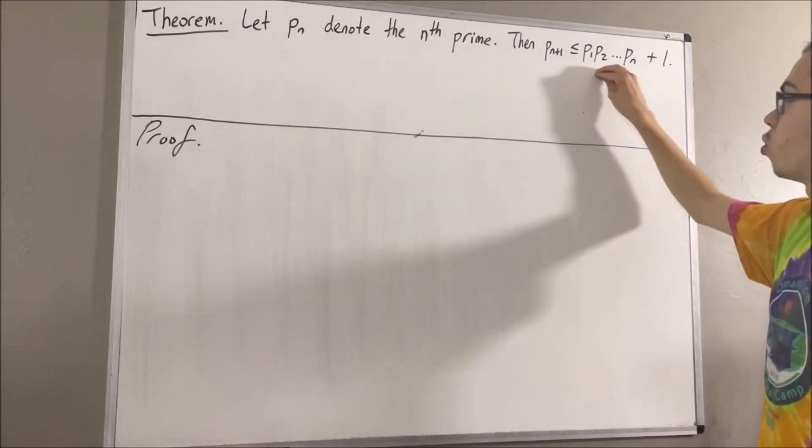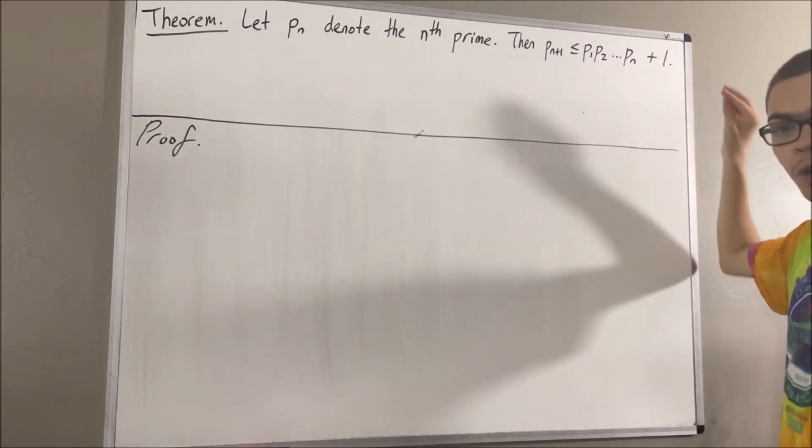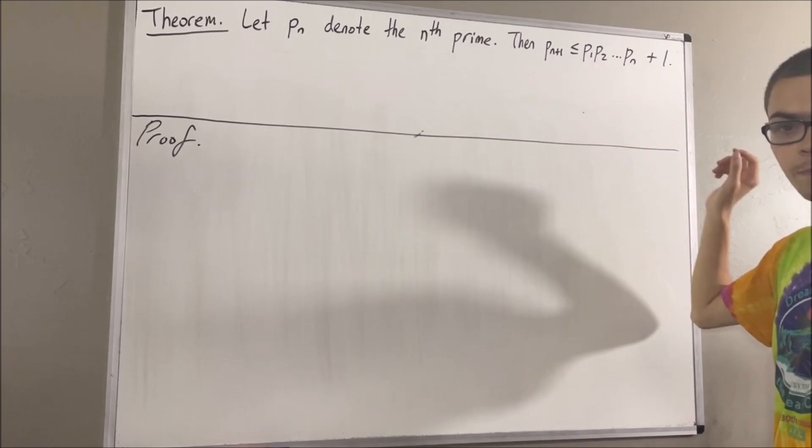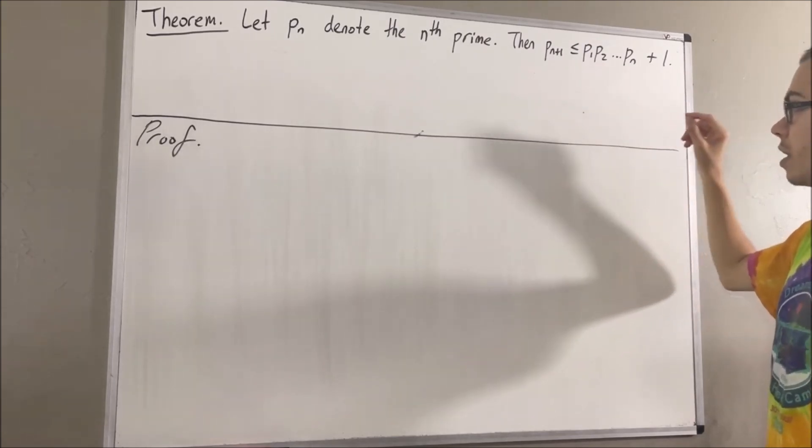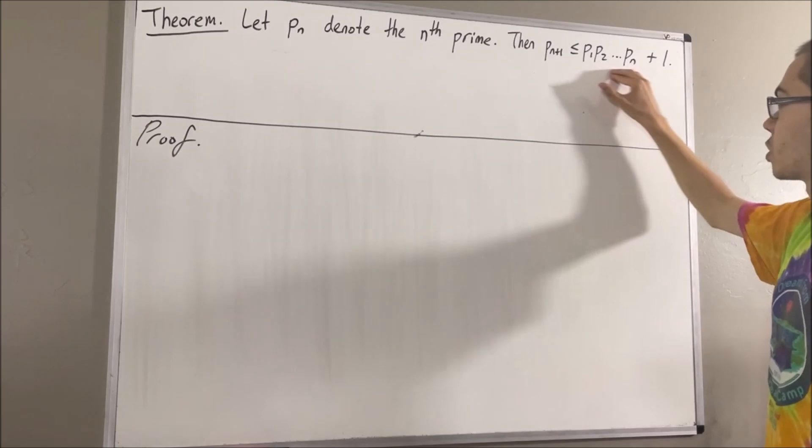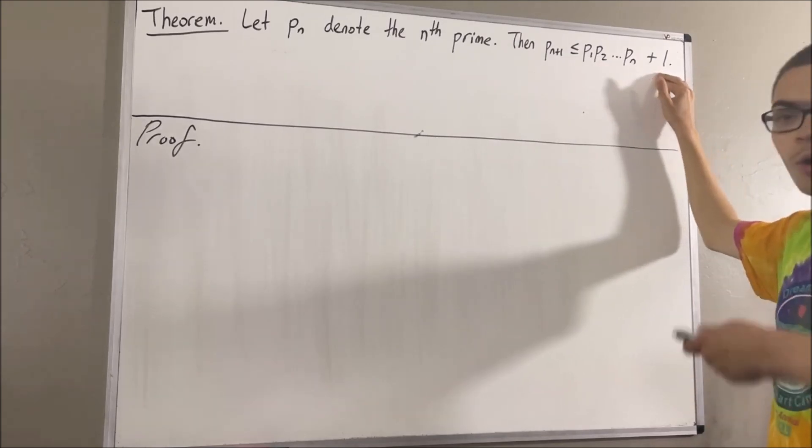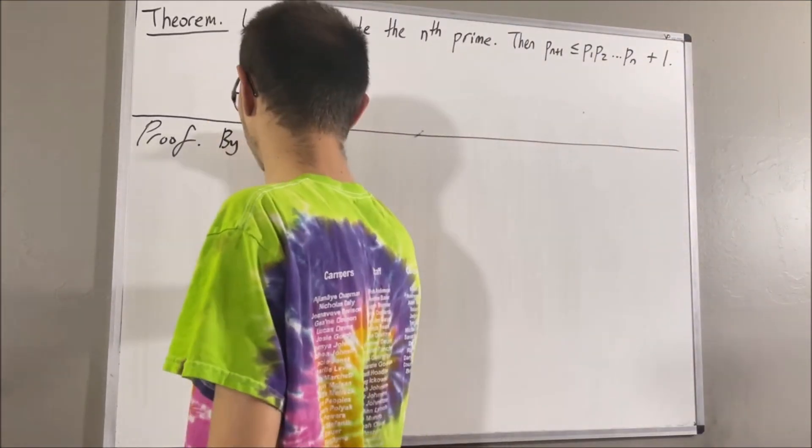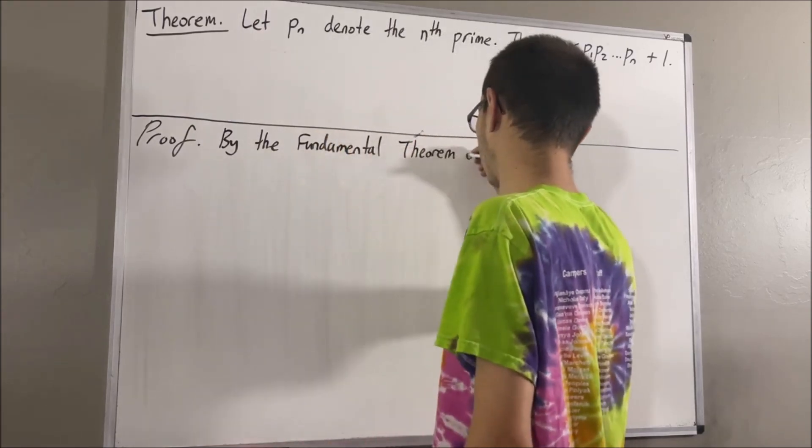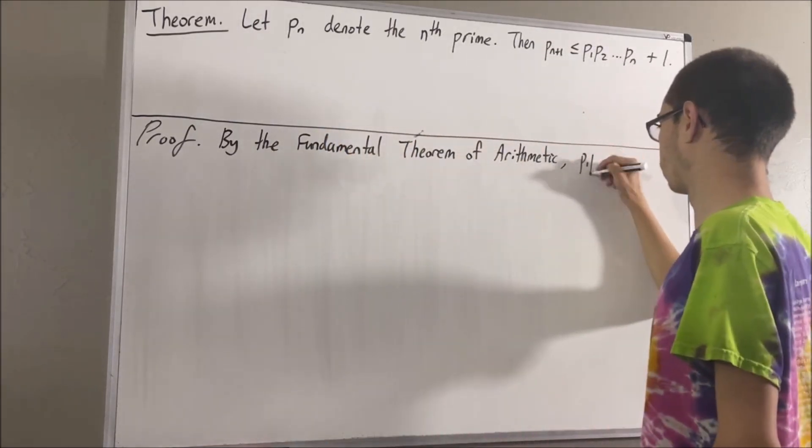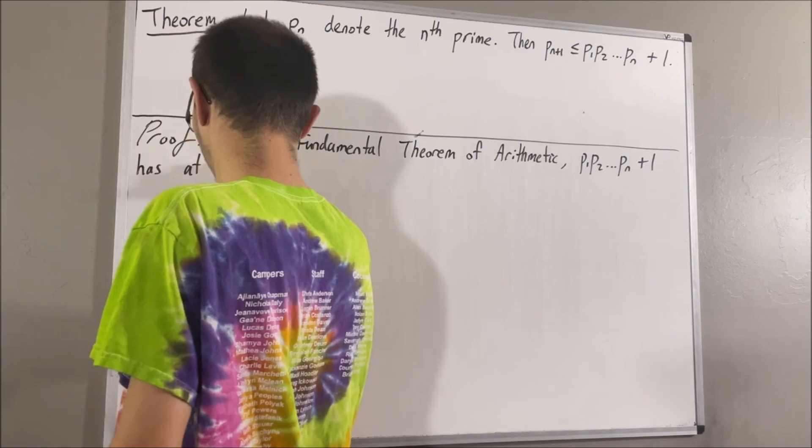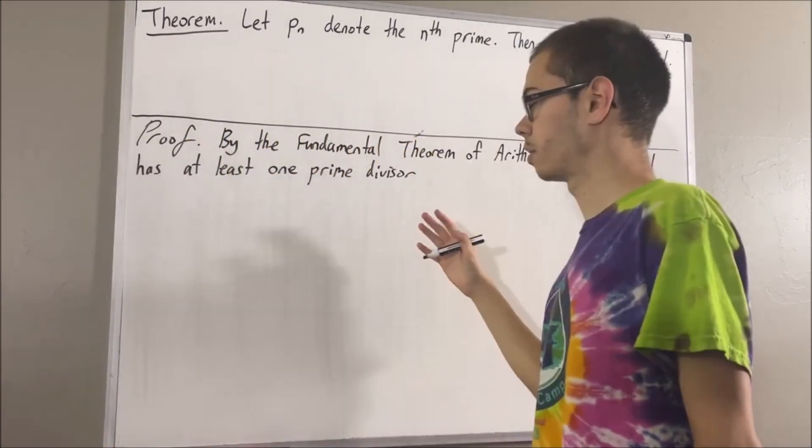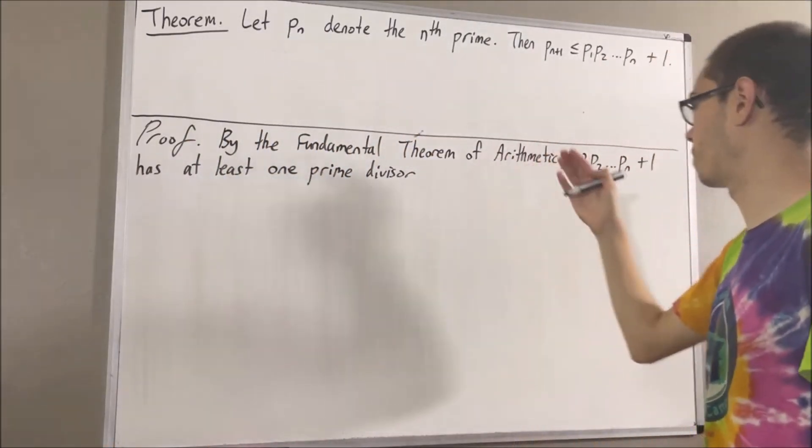We know that this quantity has at least one prime divisor. The reason why is because, by the fundamental theorem of arithmetic, this quantity is either prime or a product of primes. And we'll say that q is a prime divisor of this quantity.